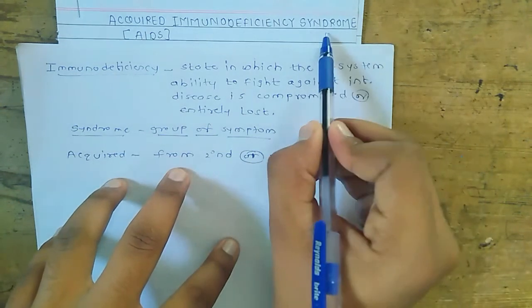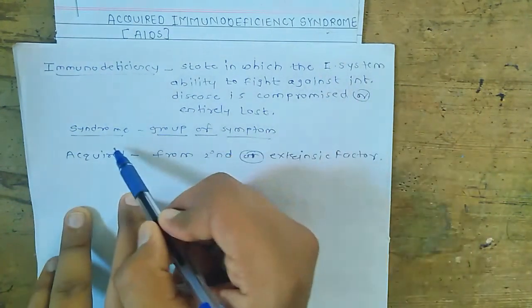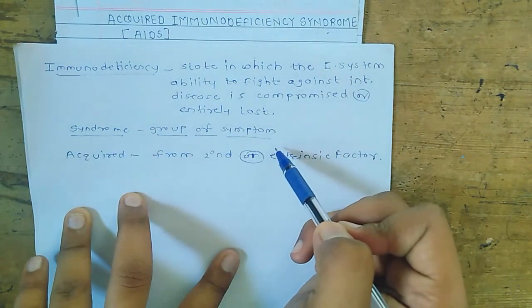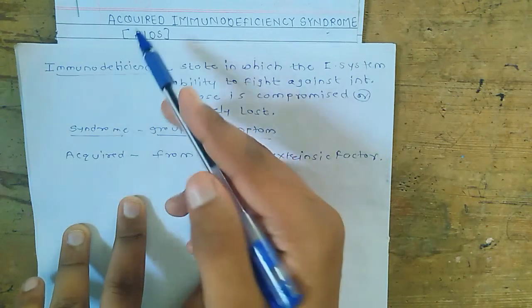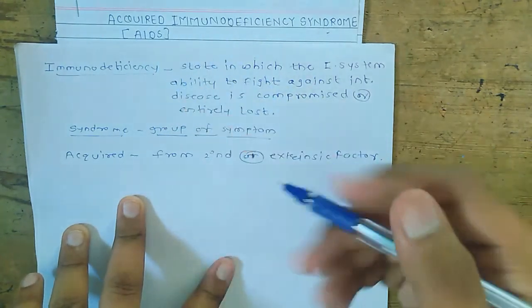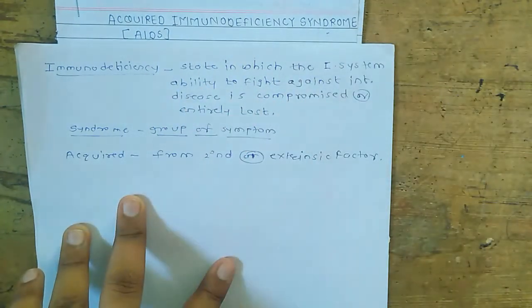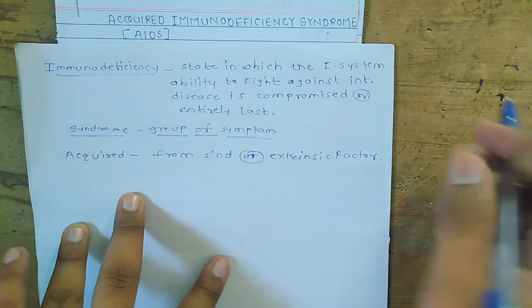What is Syndrome? Syndrome means a group of symptoms. And Acquired means it is acquired from secondary factors, not from birth.